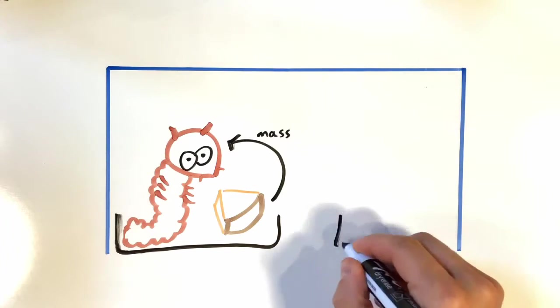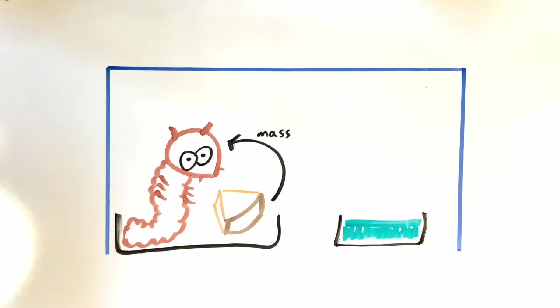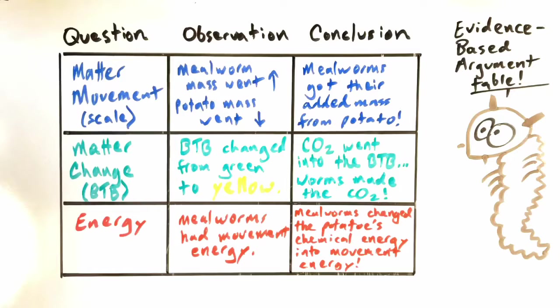The mealworms and potatoes were not the only things in the system. We also had our BTB. And that started off green. And then it changed to yellow. And we concluded that this meant that carbon dioxide was coming from the worms and entering the BTB.